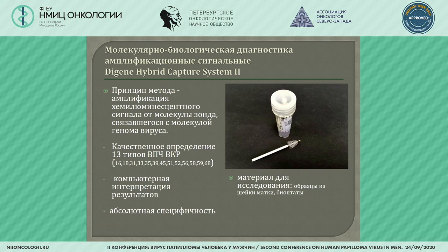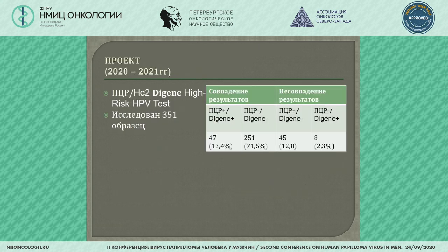The material used includes samples from the cervix and bioptates. Since July 2020, we started a serious project — screening diagnostics of HPV in women at high risk for development of cancer. It involves a parallel study of biomaterial with both PCR and the Digene test.